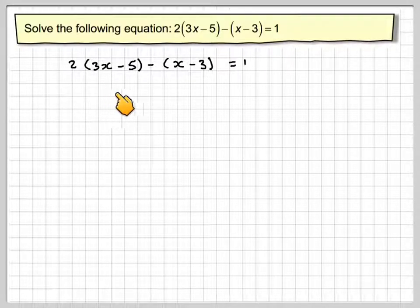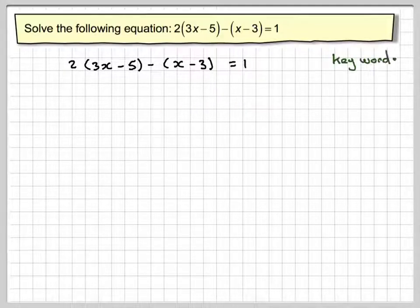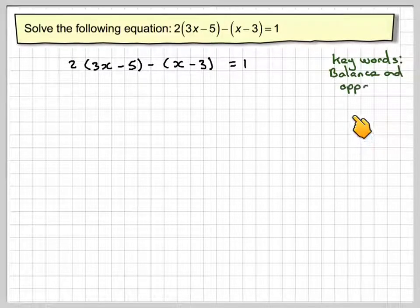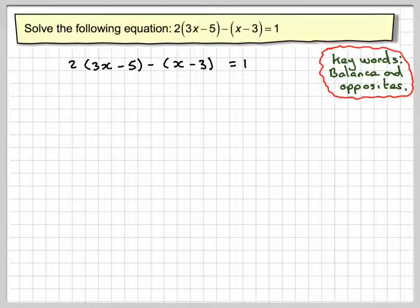So 2(3x - 5) - (x - 3) = 1. The key words again are balance and opposites. Balance means to do the same thing to both sides.